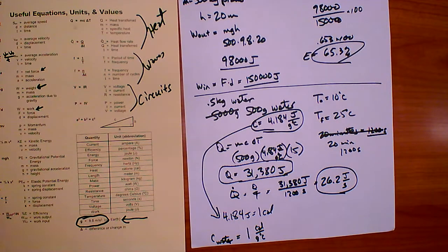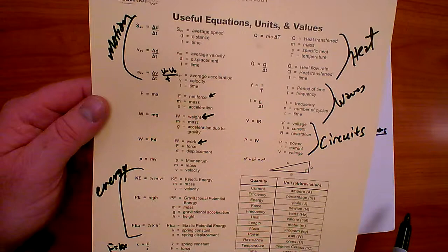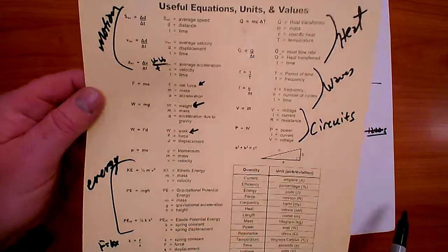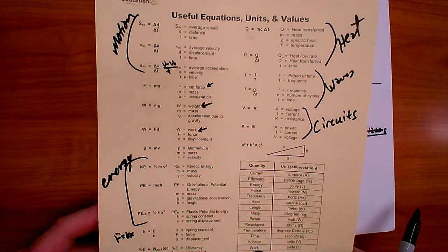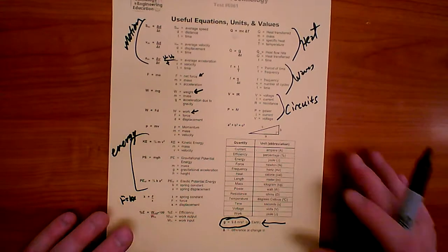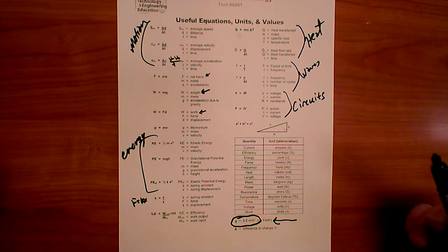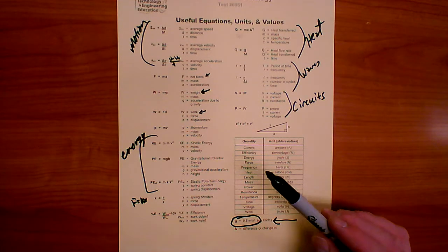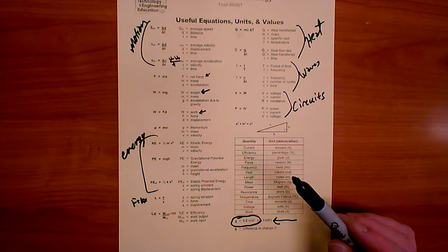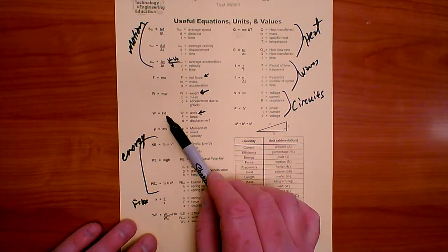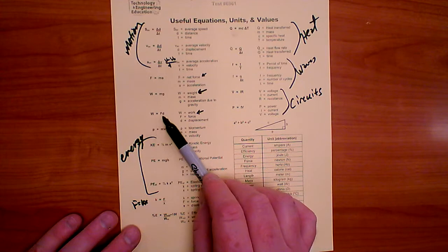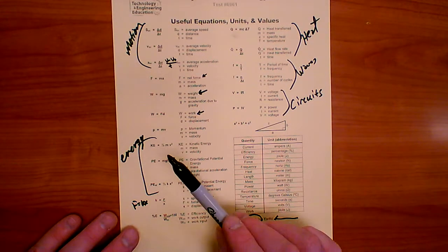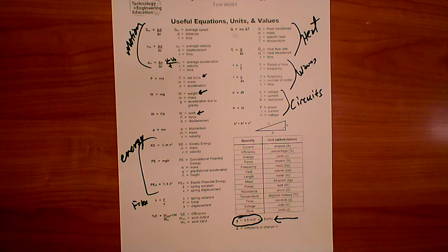That's a quick tour of the equation sheet for the Physics with Technology Precision Exam. When given a problem, identify what quantities are involved, find the matching equation, plug in the numbers, and solve. For example, if a problem involves work and distance, use W equals FD and rearrange for whatever is unknown. I hope you found this helpful — if you have questions, please talk to your teacher.